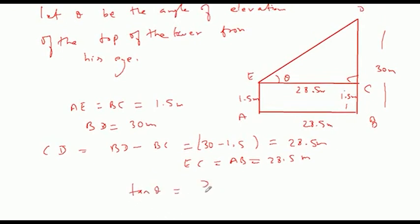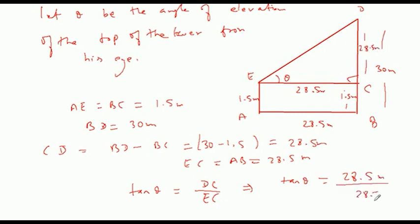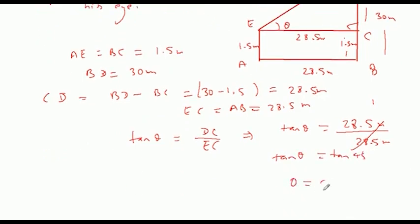D C equals 28.5 meter and the base D C equals 28.5 meter, giving tan theta equals 28.5 over 28.5 equals 1. Therefore tan theta equals 45 degree.